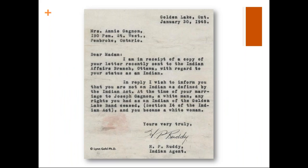This slide shows a letter from Lynn's great-grandmother, Annie Gagne, who in 1945 was confused about her identity and wanted to know if she was counted as an Indian. She wrote a letter to Indian Affairs. The response stated: 'At the time of your marriage to Joseph Gagne, a white man, any rights you had as an Indian agent of the Golden Lake band ceased and you became a white woman.' This letter was from Indian agent H.P. Ruddy. Importantly, Joseph Gagne was actually Indigenous through his mother and French through his father — so he actually wasn't a white man.